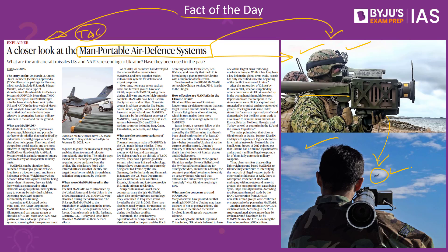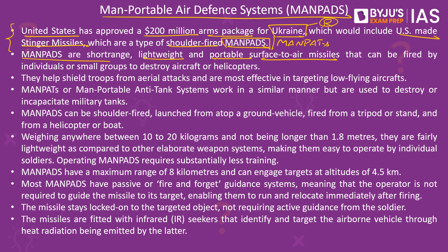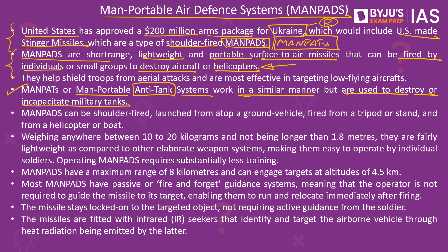This topic is in news because recently the United States approved a 200 million dollar arms package for Ukraine to help Ukraine fight back against the Russian invasion. This arms package would include US-made Stinger missiles and Javelin missiles, which are types of shoulder-fired MANPADS and MANTADS respectively. MANPADS are essentially short-range, lightweight, portable surface-to-air missiles that can be fired by individual soldiers or a small group of soldiers to target enemy aircraft and helicopters breaching their country's airspace. MANTADS, or Man-Portable Anti-Tank Systems, work in a similar manner but are used to target and destroy military tanks invading the country.